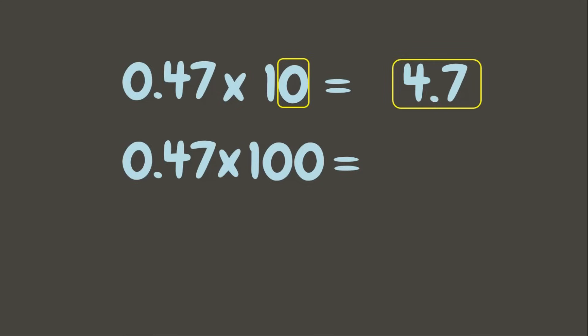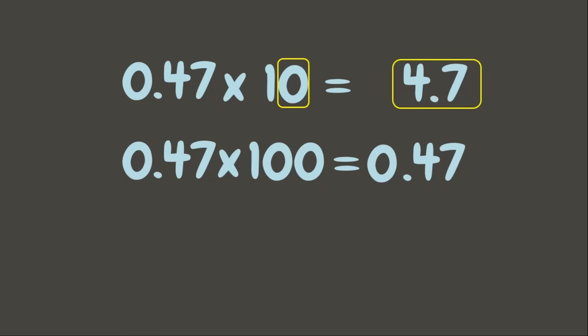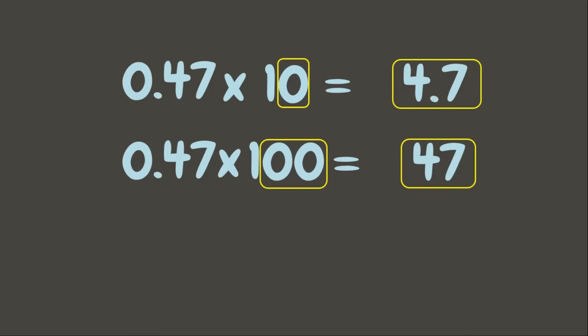Let's have another example: 47 hundredths times 100. First, let us copy 47 hundredths. Since 100 has two zeros, we are going to move the decimal point two decimal places to the right: one, two. Then let us simply remove the zero and the decimal point. Now our answer is 47.